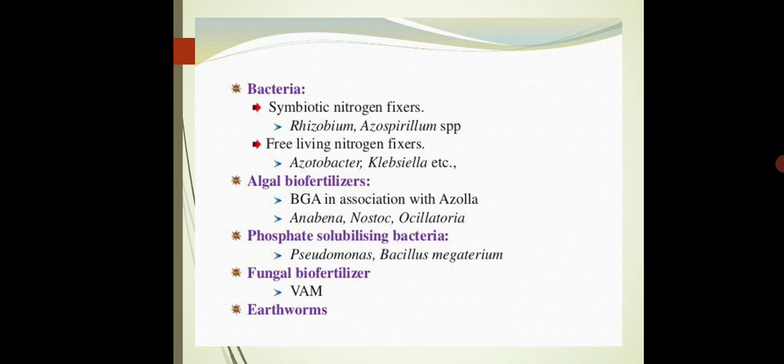This is a symbiotic relationship. Opposite to this are free-living bacteria, such as Klebsiella, which do not form any association with plants. The second class is algal biofertilizers. Examples include BGA — blue-green algae, also known as cyanobacteria — in association with Azolla. Other examples are Anabaena, Nostoc, and Oscillatoria.